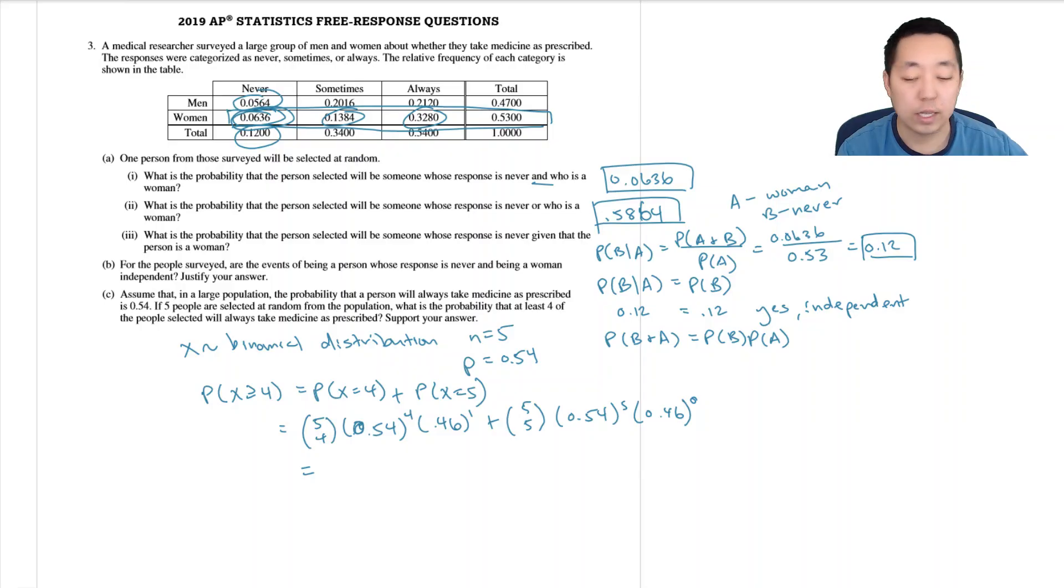If you do the calculations, I got 0.241 when I did this. This calculation is like five times this because 5 choose 4 is five. Let me just double check that again. 0.54 to the fourth, and then 0.54 to the fifth... Yeah, 0.241.